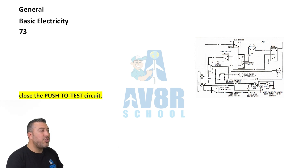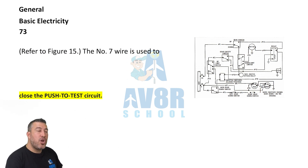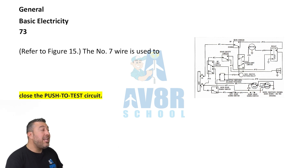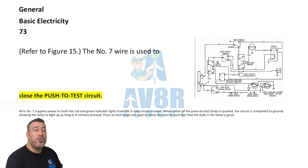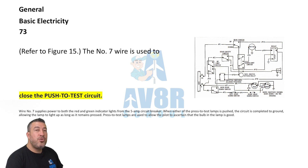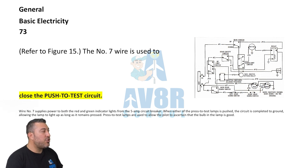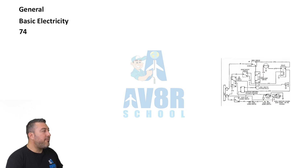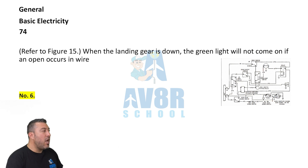Question 73, still on figure 15. Wire number 7 is used to close the push-to-test circuit.